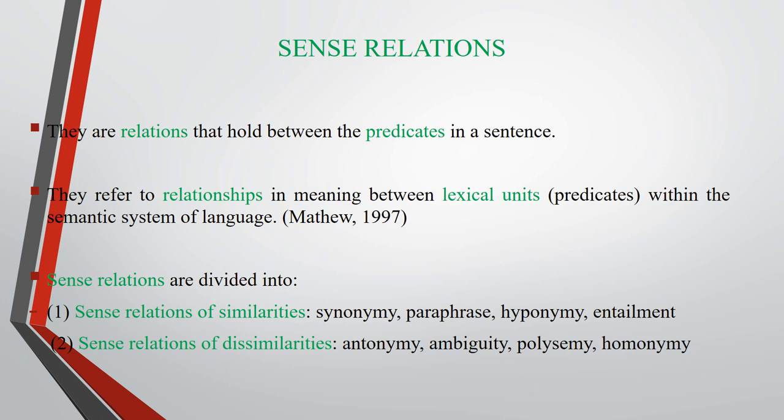Sense relations are divided into two categories. First, sense relations of similarities, which are synonymy, paraphrase, hyponymy, and entailment. Number two, sense relations of dissimilarities, which are antonymy, ambiguity, polysemy, and homonymy.